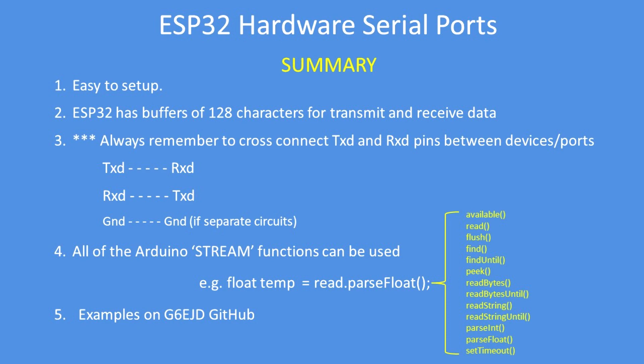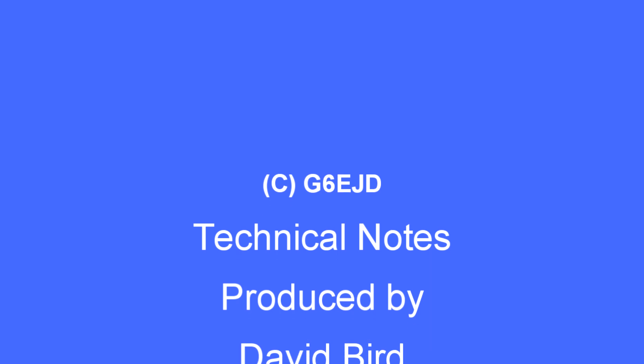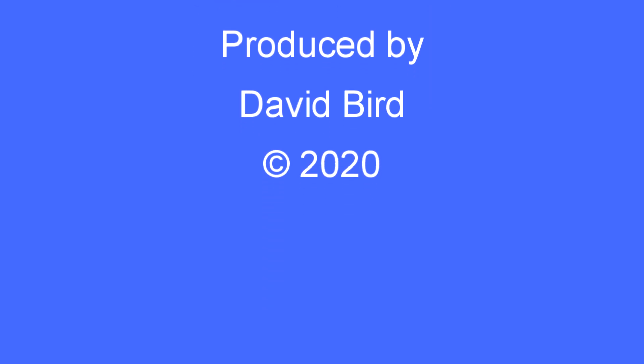In summary, it's very easy to set up the ESP32. The 128-character buffer enables easy transmission and reception. The most important thing to remember with any serial system is to always cross-connect: transmit data to receive data, receive data to transmit data — and if they're separate circuits, remember to put a common ground between them. You can use all of those Arduino stream functions. I hope you found this technical note interesting and useful.